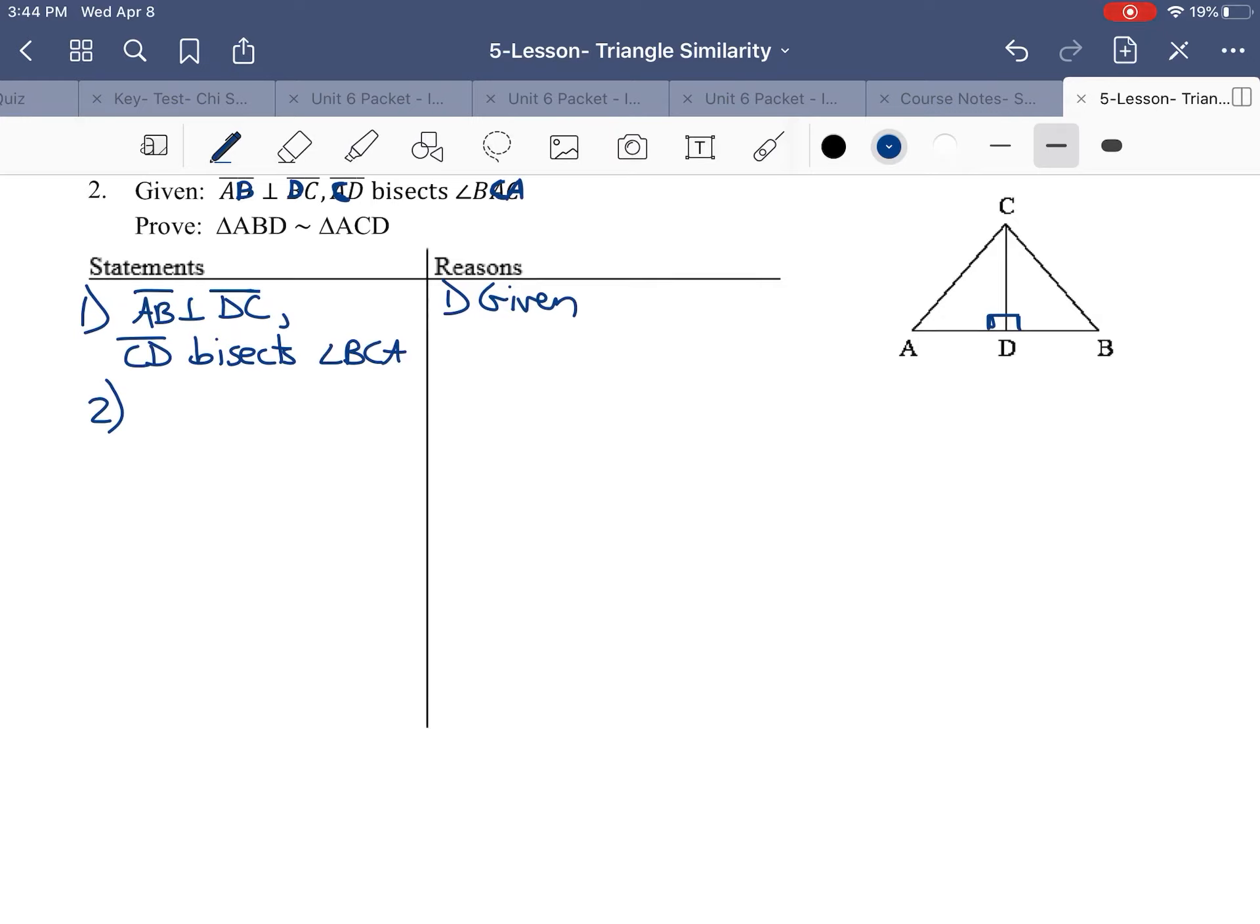So, I have all my given, slight typo. AB and DC are perpendicular, CD bisects BCA.